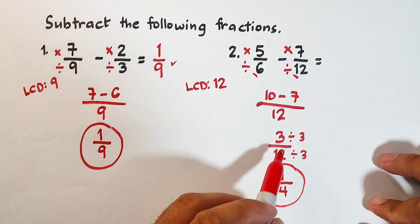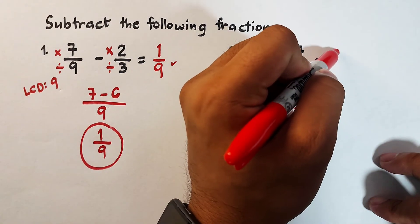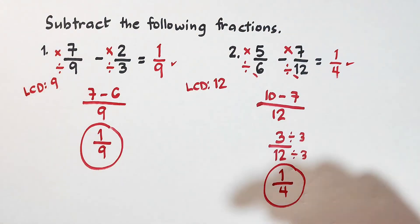And now, 5 over 6 minus 7 over 12, your difference is simply 1 fourth. So, I hope, guys, that you mastered the lesson on how to subtract fractions.